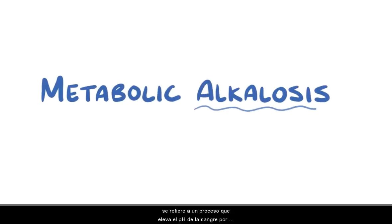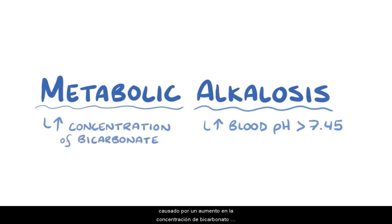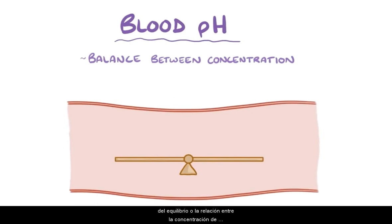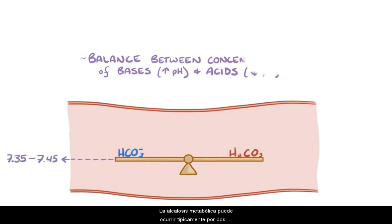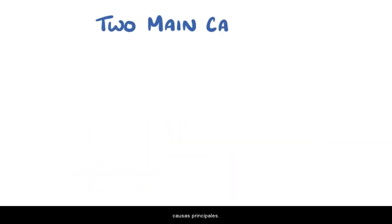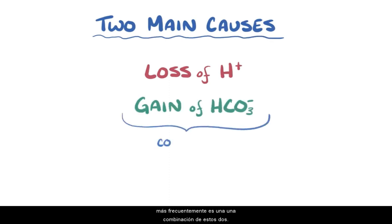With metabolic alkalosis, alkalosis refers to a process that raises blood pH above 7.45, and metabolic refers to the fact that it's caused by an increase in the concentration of bicarbonate, or HCO3-, in the blood. Normally, blood pH depends on the balance or ratio between the concentration of bases, mainly bicarbonate, which increases the pH, and acids, which decrease the pH. The blood pH needs to be constantly between 7.35 and 7.45. Metabolic alkalosis can typically happen from two main causes: loss of hydrogen ions and gain of bicarbonate ions, or most often a combination of these two.